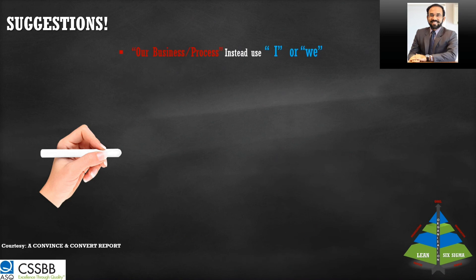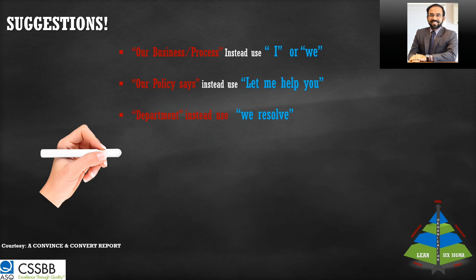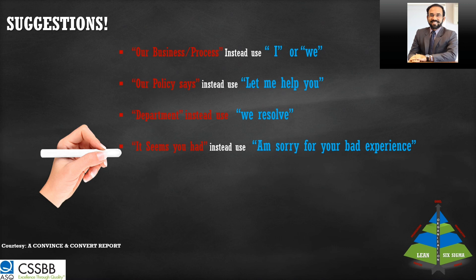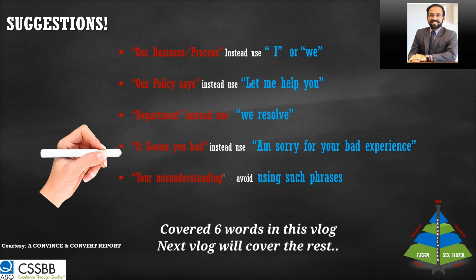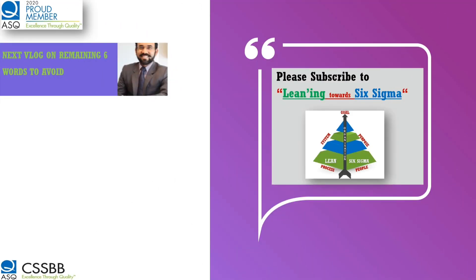Here are the suggestions. Instead of 'our business process,' use 'I' or 'we' — 'I will help you,' 'we will help you to resolve.' Instead of 'our policy,' say 'let me help you with that.' Instead of referencing departments, say 'we will resolve' — representing the entire organization. Instead of 'it seems you had a bad experience,' say 'I'm sorry for your bad experience.' Avoid misunderstanding-blame phrases entirely. I have covered the first six — I will cover the remaining six in my next vlog.